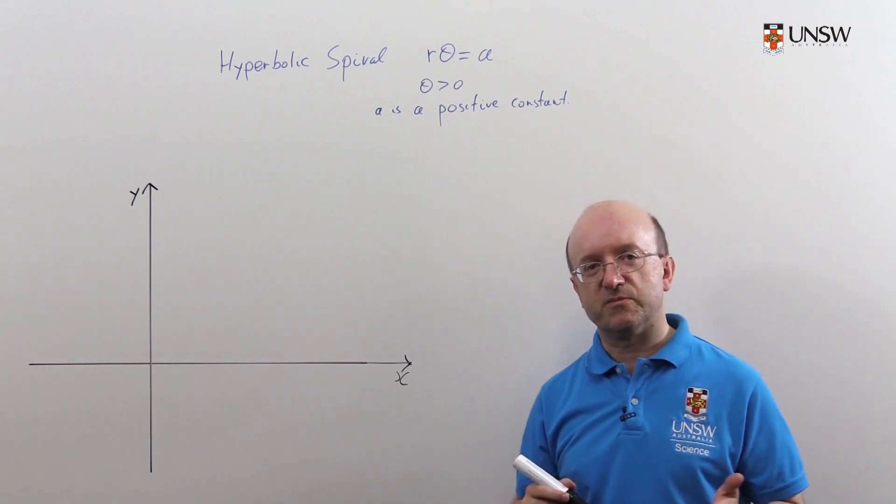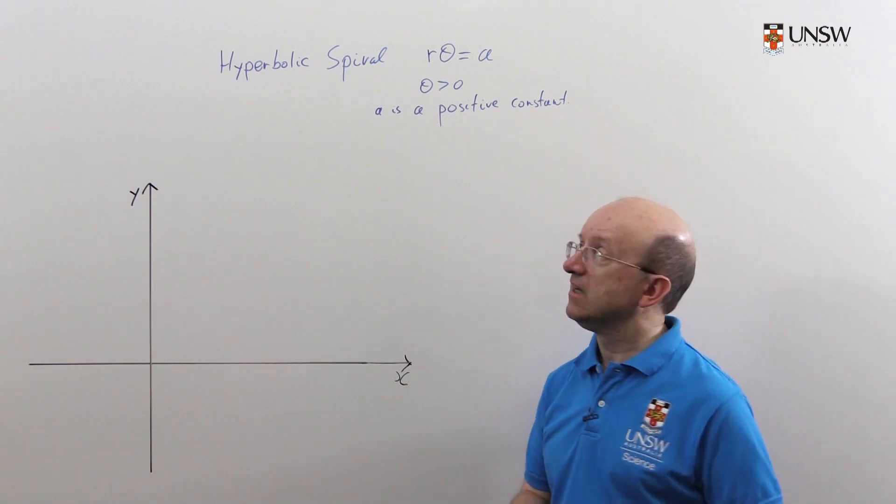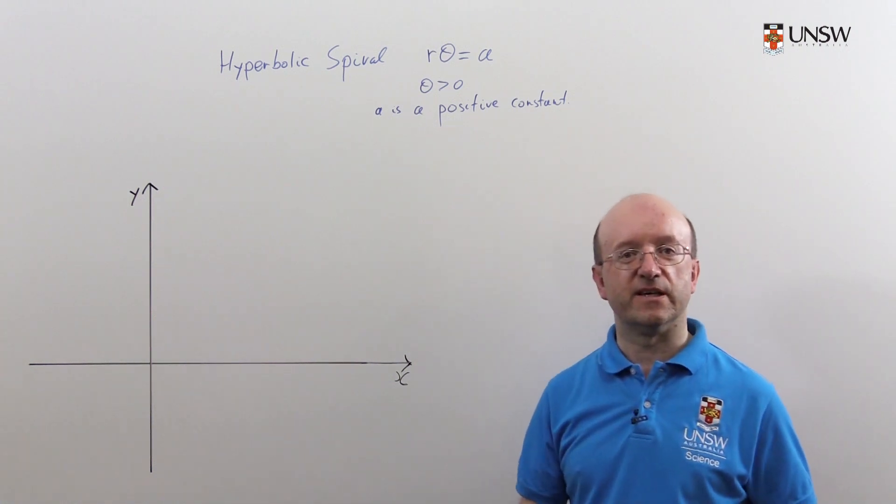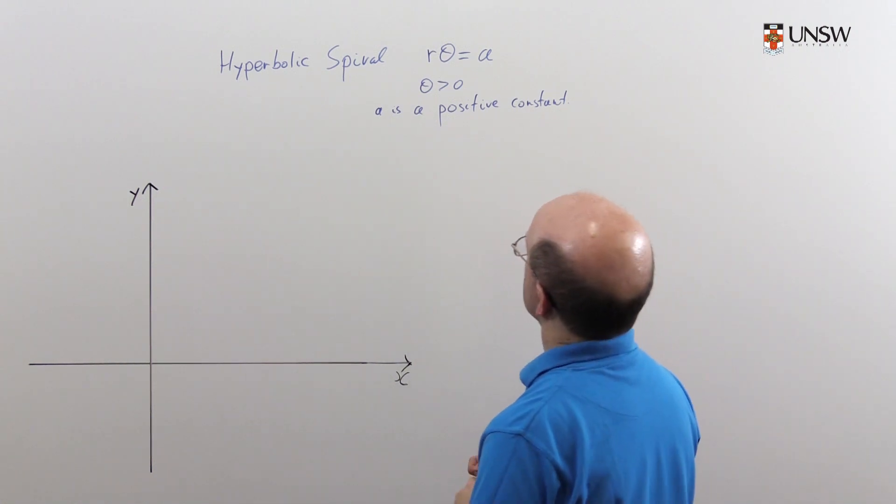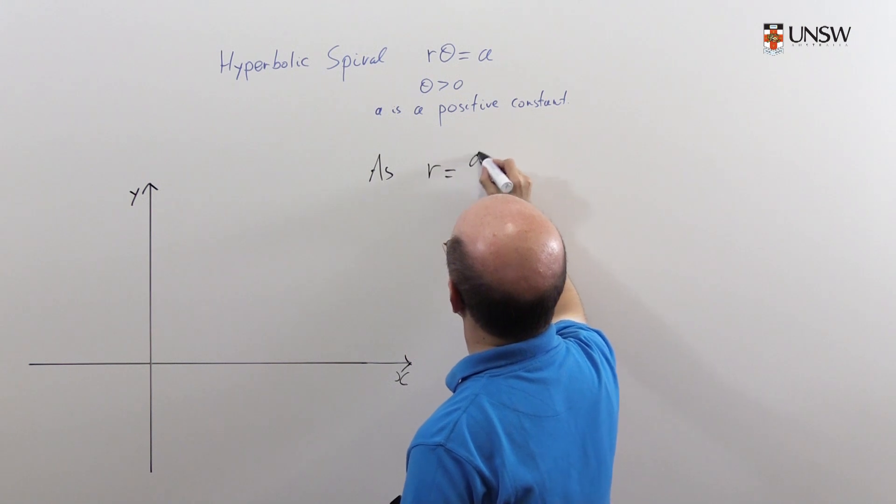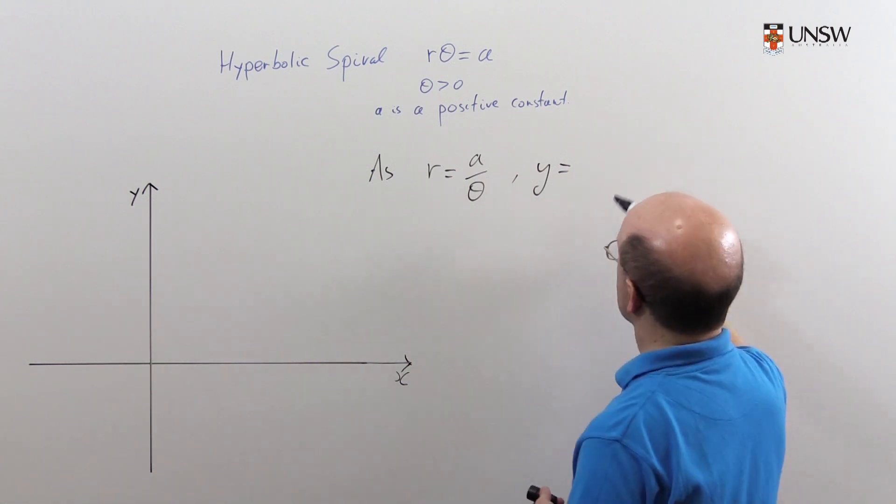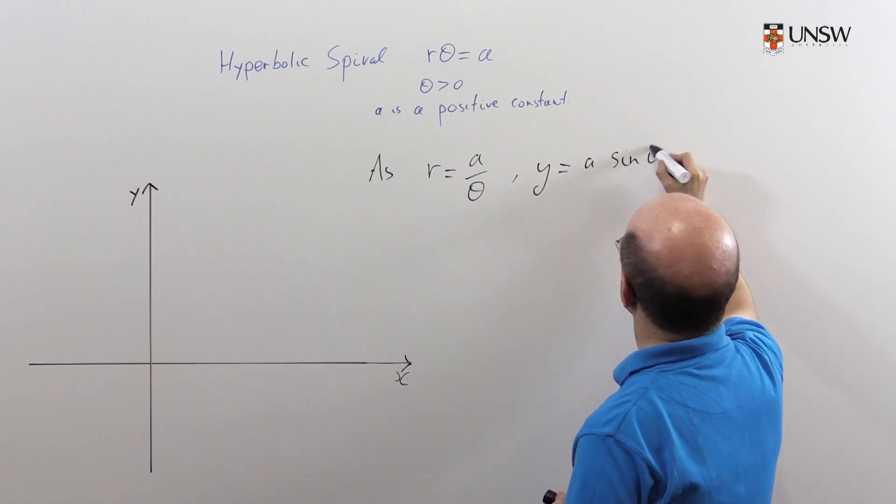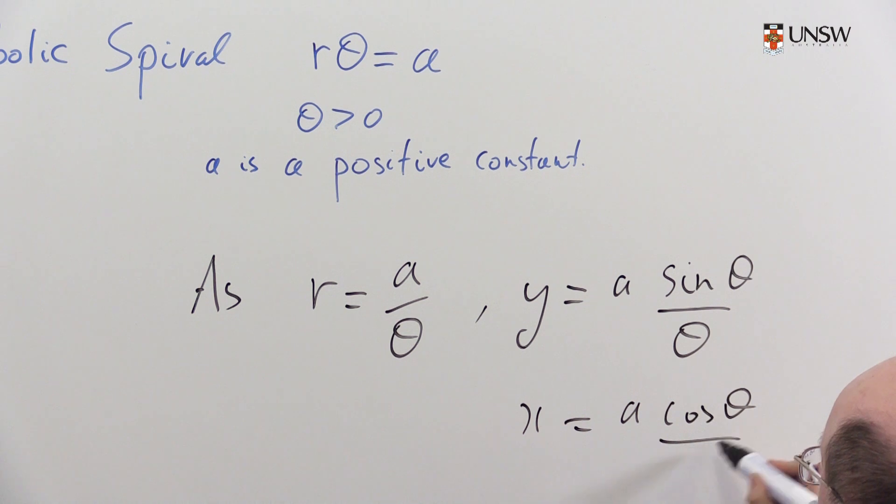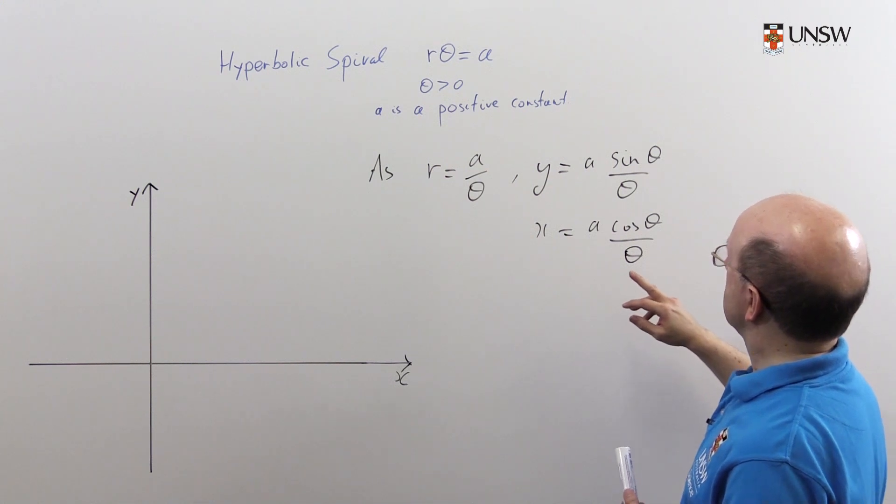Now the first thing we want to prove is that the line y equals a is a horizontal asymptote to this particular curve. Let's rewrite this: we got r is a over theta. Then in Cartesian coordinates, y will be a sine theta over theta and x will be a cosine theta over theta. I've written y first because that's the thing we're interested in.